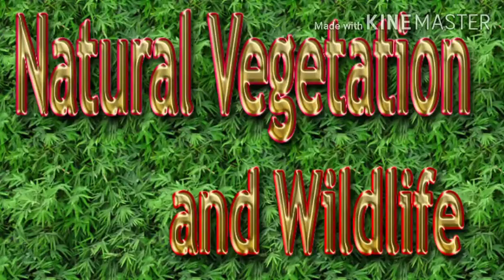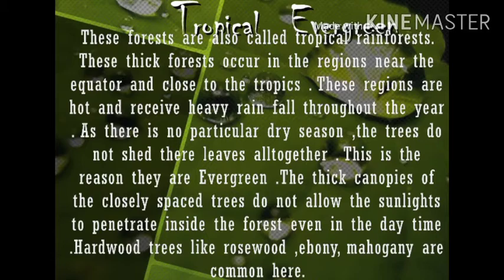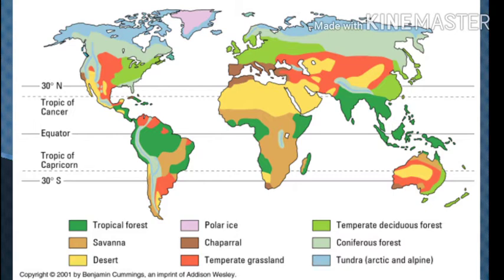Tropical evergreen forests are found in equatorial and wet tropical regions. The temperature is hot and humid throughout the year and the annual rainfall is between 1800 and 2500 millimeters. These forests are also known as tropical rainforests. There is no particular dry season, so the trees do not shed their leaves altogether — that is the key significance of tropical evergreen forests.